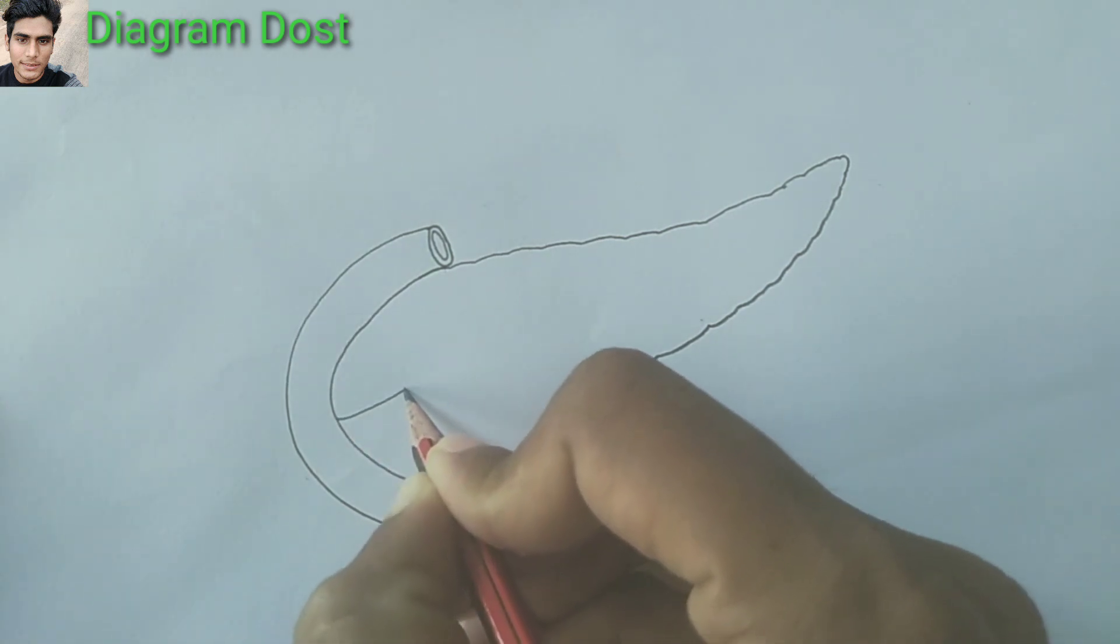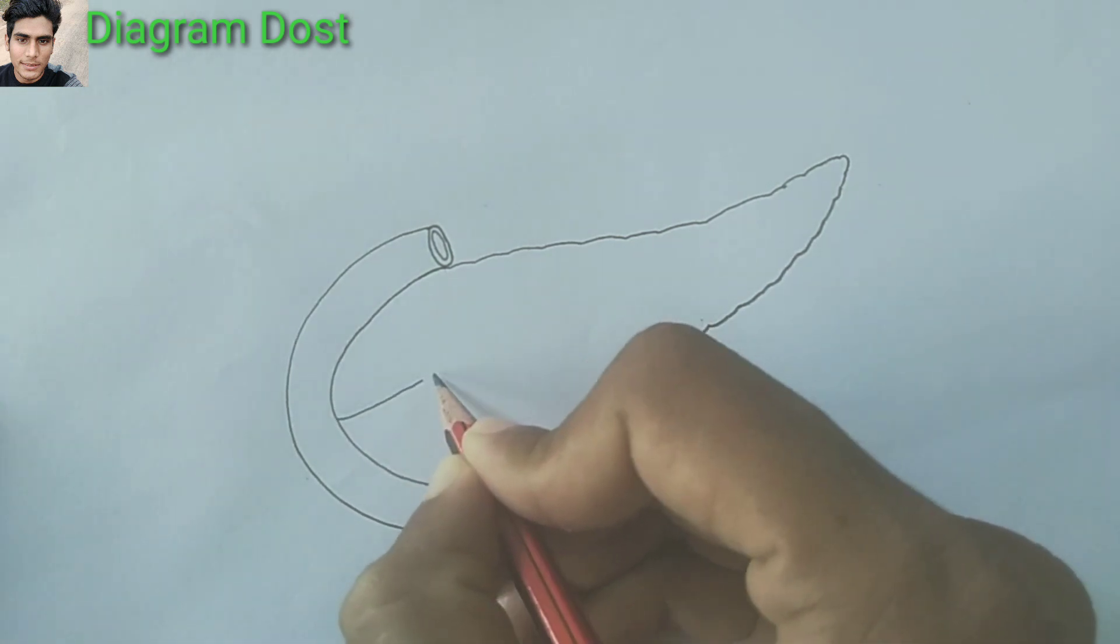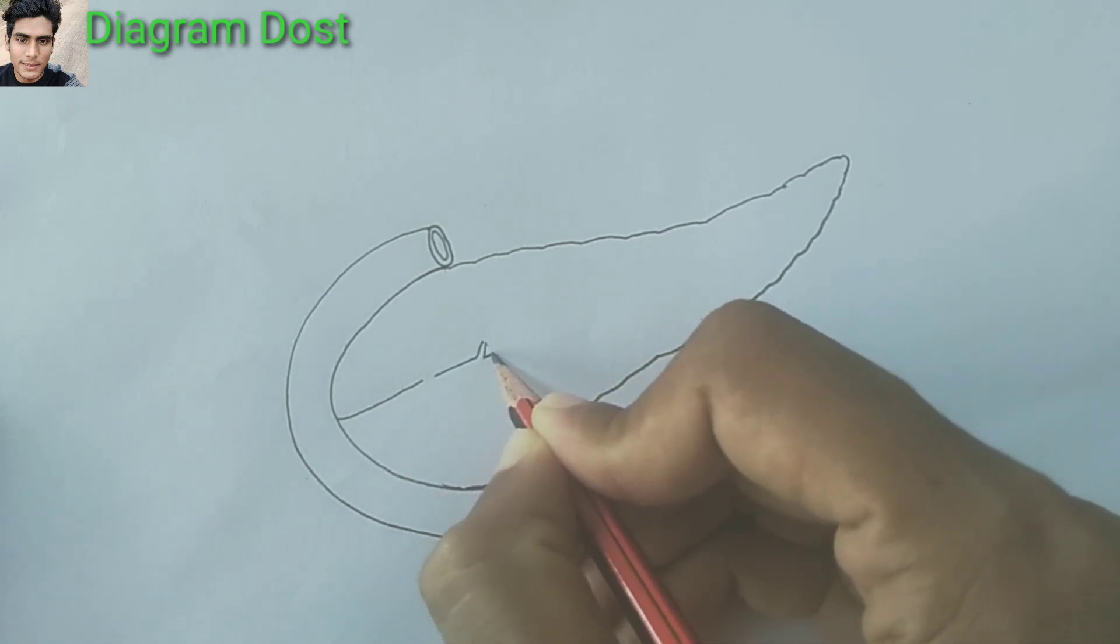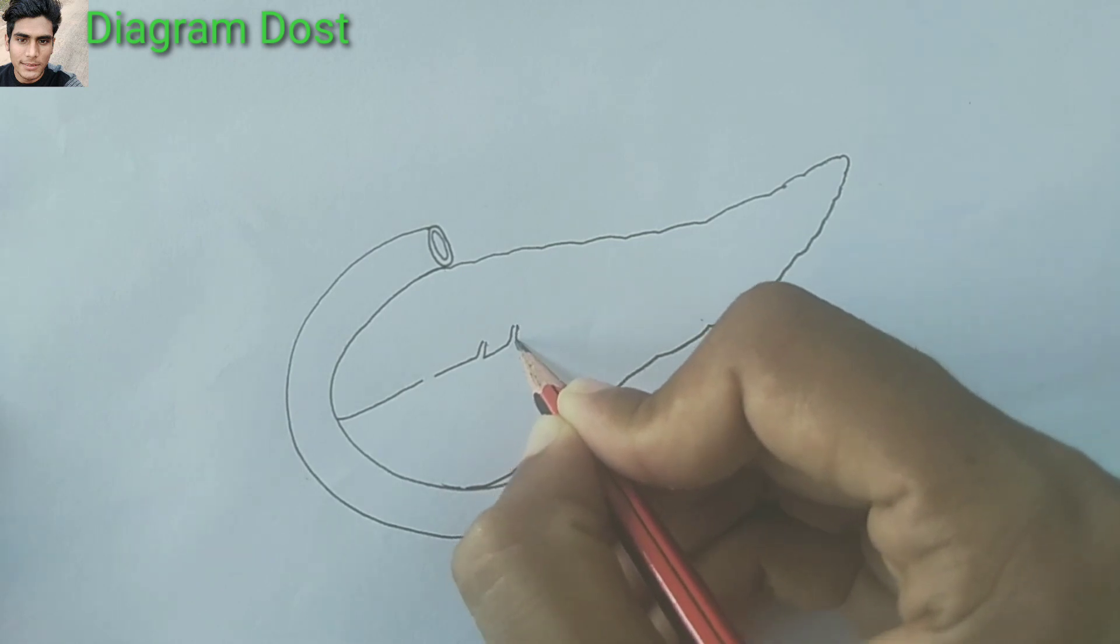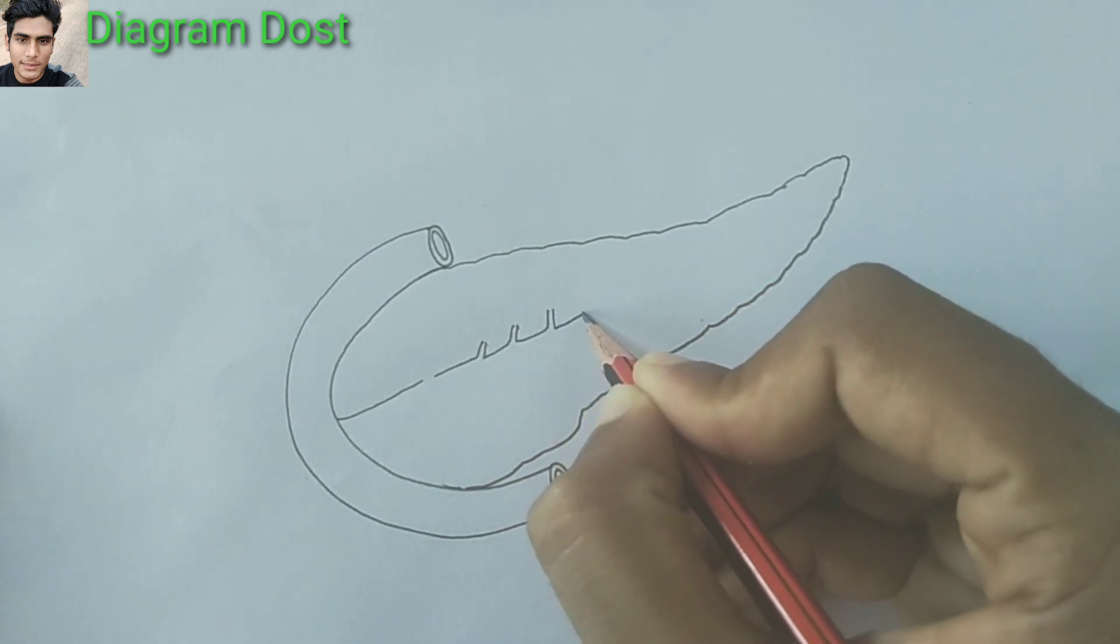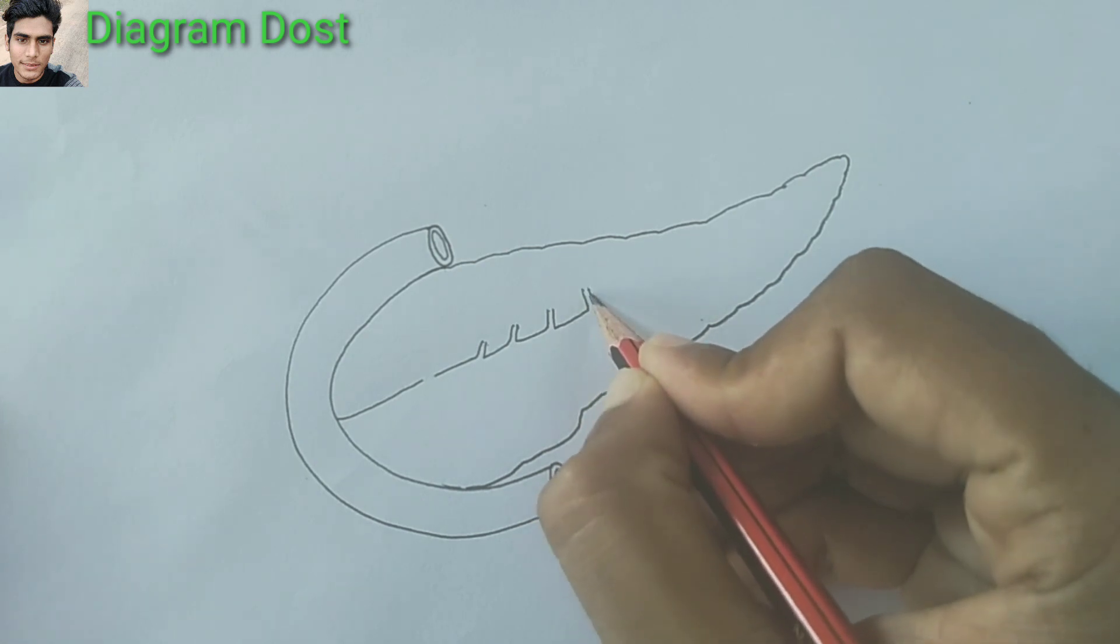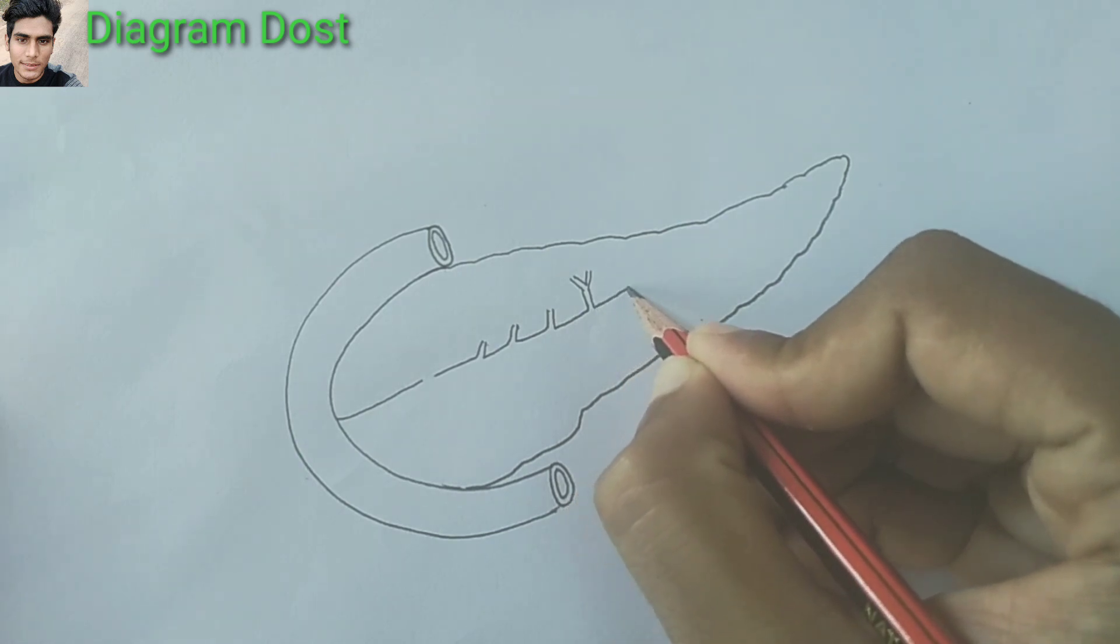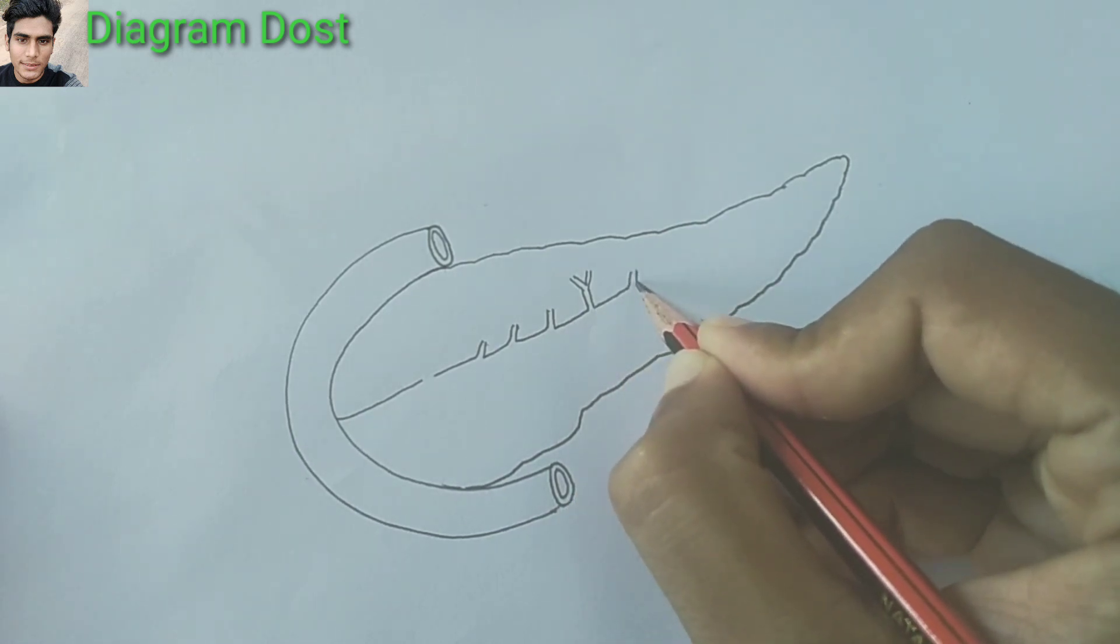Now I am drawing the structure known as pancreatic duct. It is a tube-like structure with a lot of networks. I am making networks—these are small ducts which are present in the pancreas. This is a network.